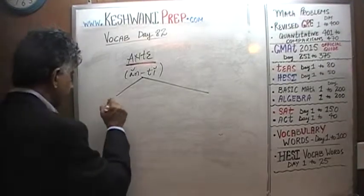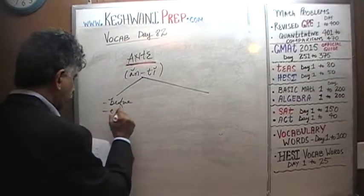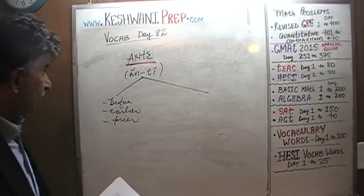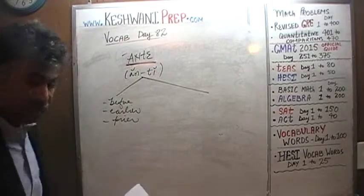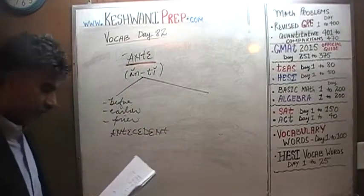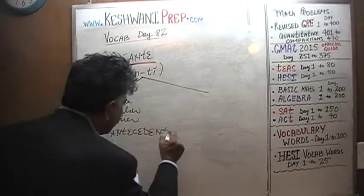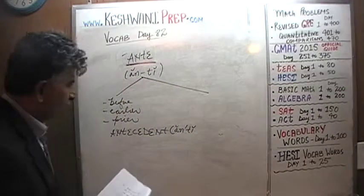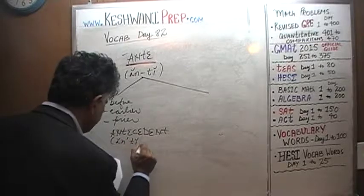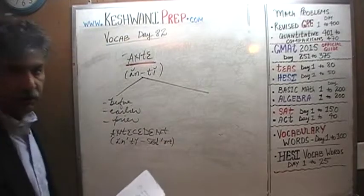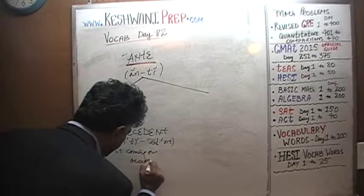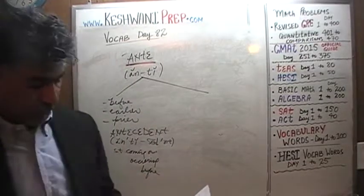Ante has two meanings. One meaning we've already learned is 'before,' or earlier, or prior. The words we can gather from this meaning of ante — which means before — include words such as 'antecedent,' which means something that comes or occurs before.